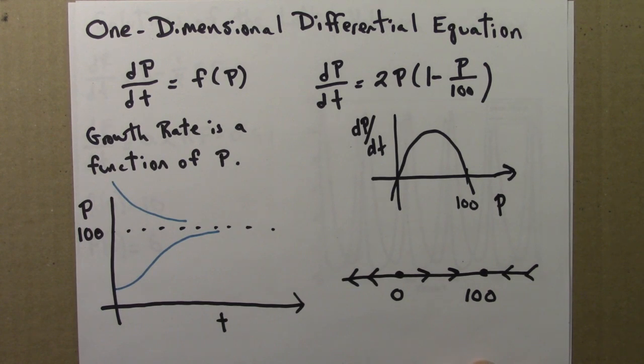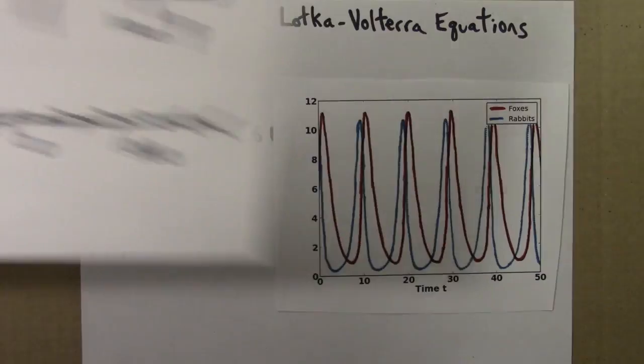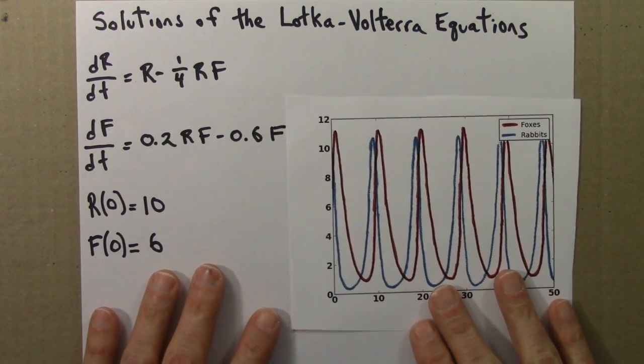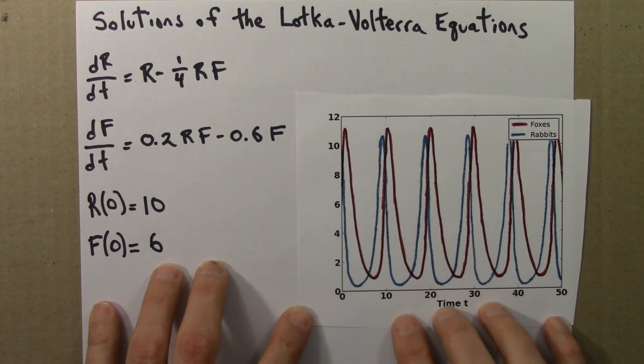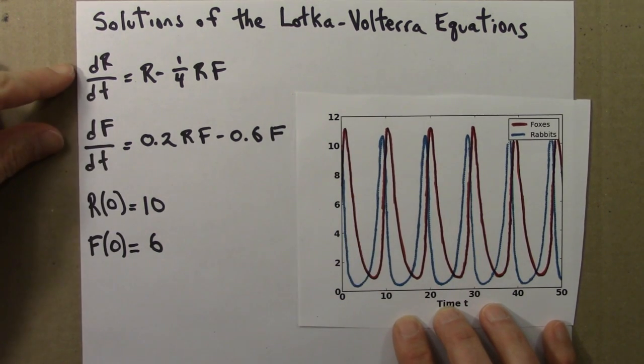So what I'd like to do next is generalize this idea of a phase line to two dimensions. So as before, here are the solutions to the Lotka-Volterra equation. There are two solutions because we're keeping track of two different things, the rabbits and the foxes.